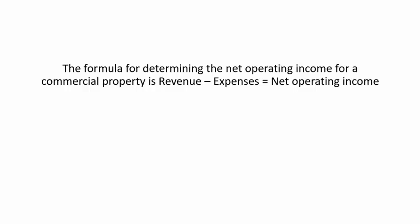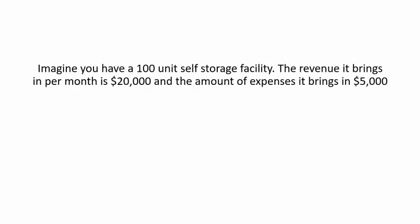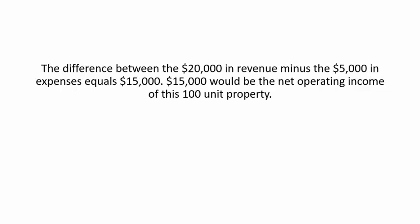The formula for determining the net operating income for a commercial property is revenue minus expenses. Imagine you have a 100-unit self-storage facility. The revenue it brings in per month is $20,000, and the expenses are $5,000. The difference between the $20,000 in revenue minus the $5,000 in expenses equals $15,000, which would be the net operating income of this 100-unit property.